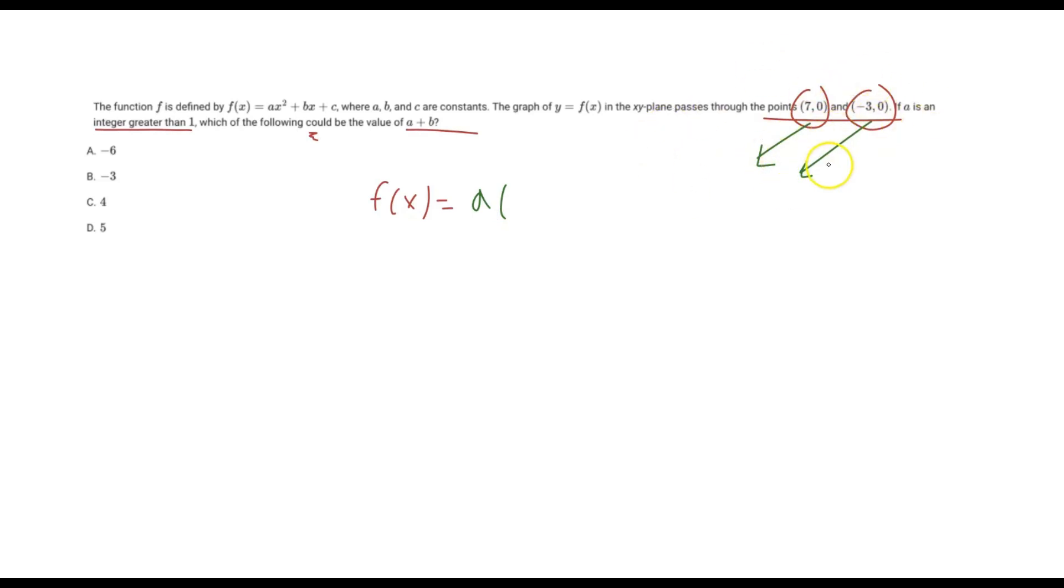So when you have these coordinate points as solutions, you can rewrite them in their factor form. So (7,0) can be written as (x - 7), because when you set this equal to 0, you solve and get positive 7. And (-3,0) can be written as (x + 3).